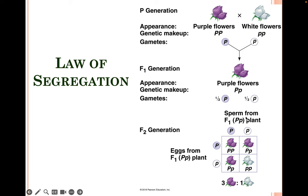If we cross true breeding purple flowers, they're homozygous dominant — they have two of the same dominant allele. The white-flowered true breeding parents are homozygous recessive — they have two copies of the recessive allele. When we cross them, this parent can only give a dominant P allele and this parent can only give a lowercase p allele. When those two alleles combine to form an F1 offspring, all the offspring — 100% — will be heterozygotes. They have two different alleles for that flower color gene.